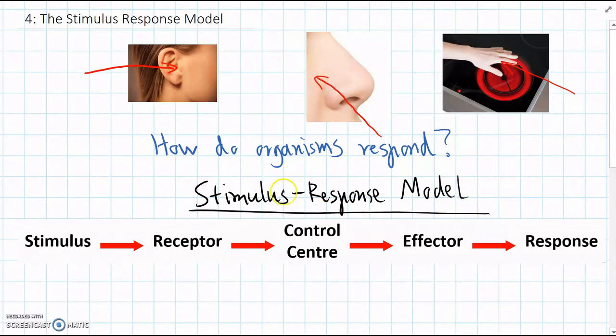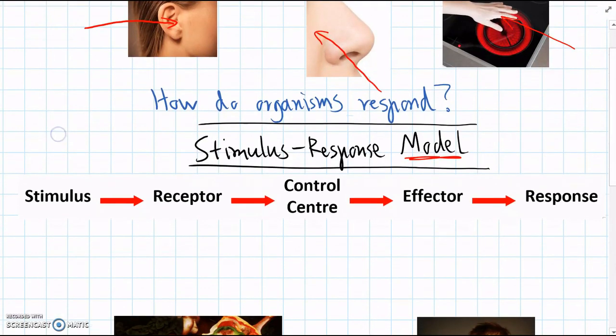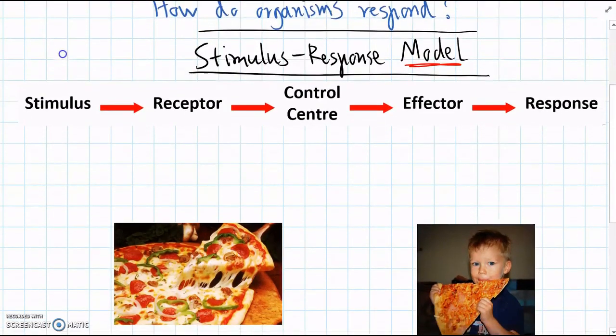And like every model in science, this is an explanation that is a little bit simplified, but it tries to explain something in nature. Every model is a simplification to explain what we observe. And we're going to use this stimulus response model a lot to show how organisms, and how animals in particular, make decisions.